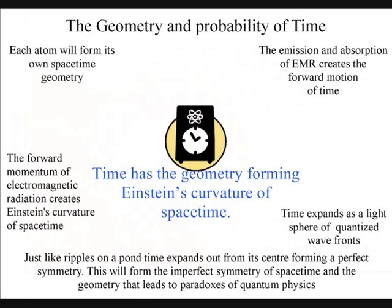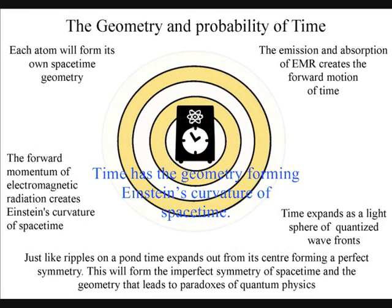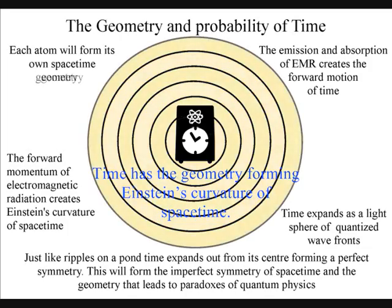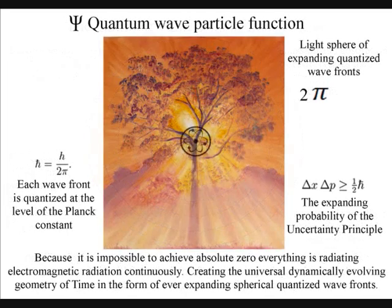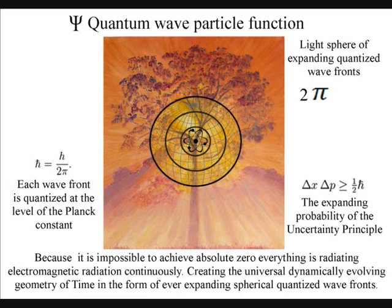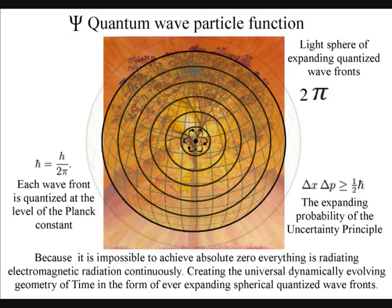In this theory, the passage of time, at the most fundamental level, is continuously formed by the spontaneous absorption and emission of light, collapsing and reforming the wave-particle duality of light, forming new photons in space and new moments in time that will have the geometry of space-time.